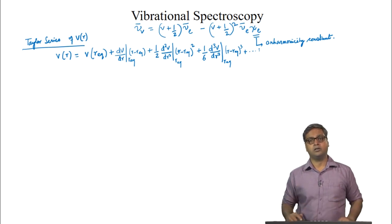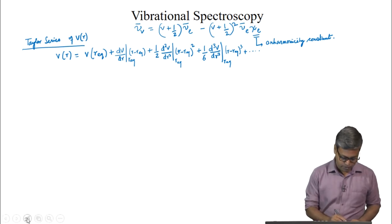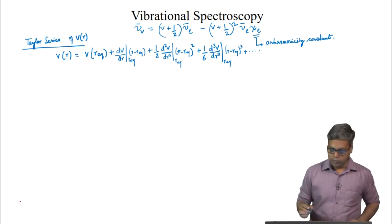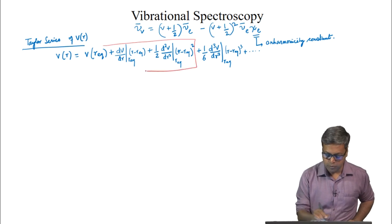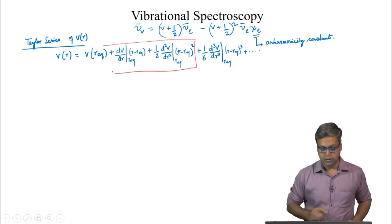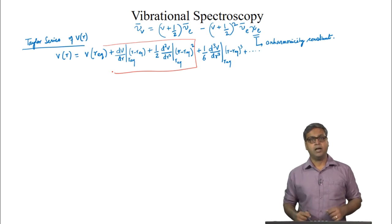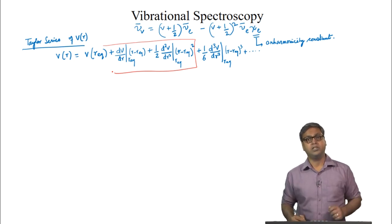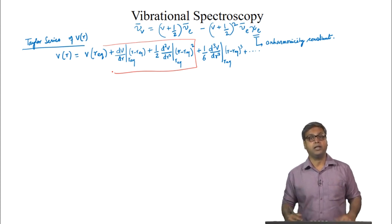For the harmonic oscillator solution, we considered only up to the second-order term. However, we know that anharmonicity affects the shape of the potential at distances away from the equilibrium bond length.